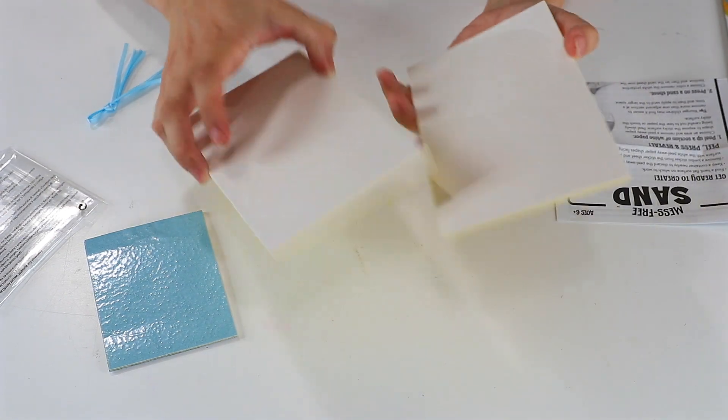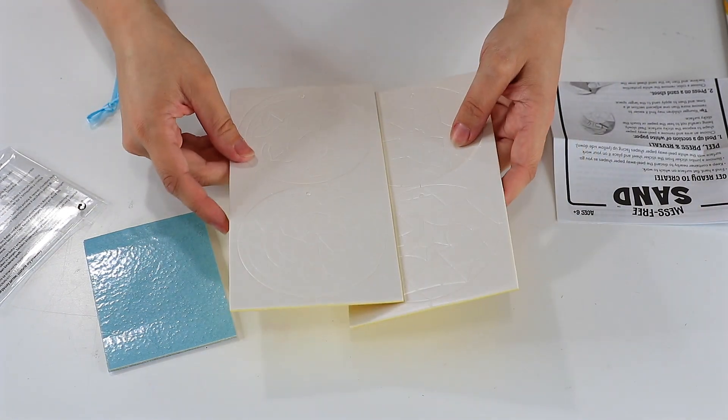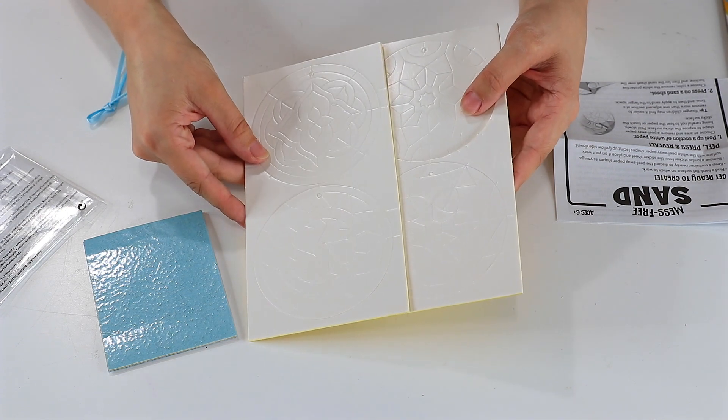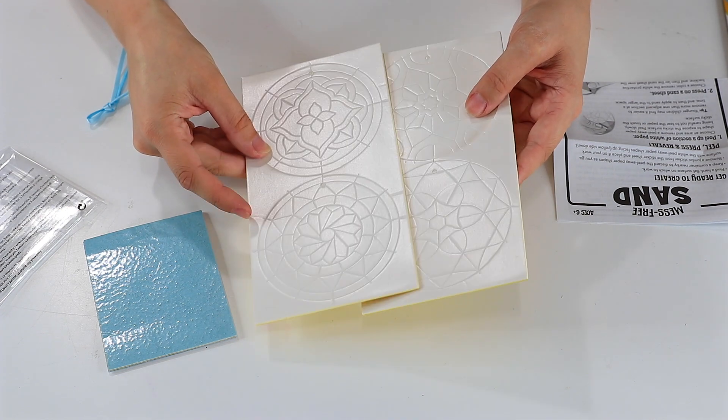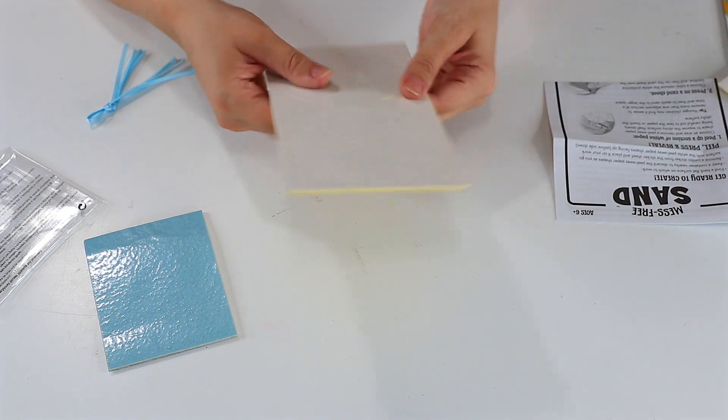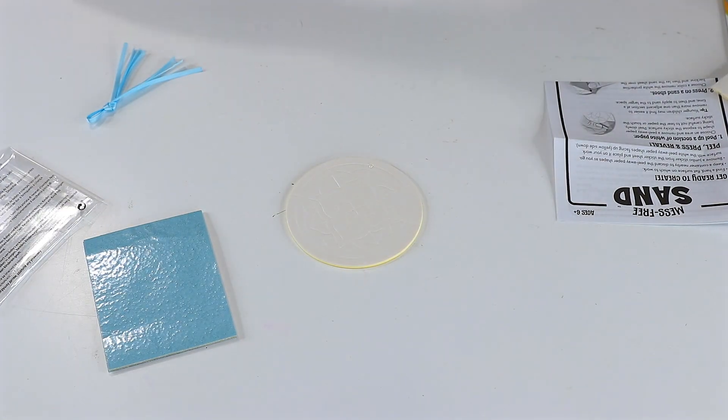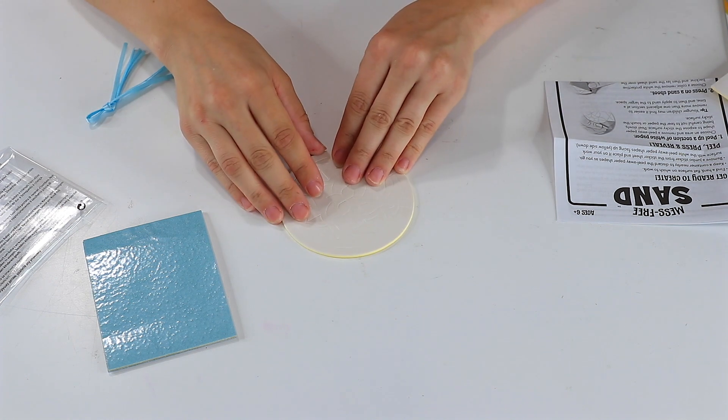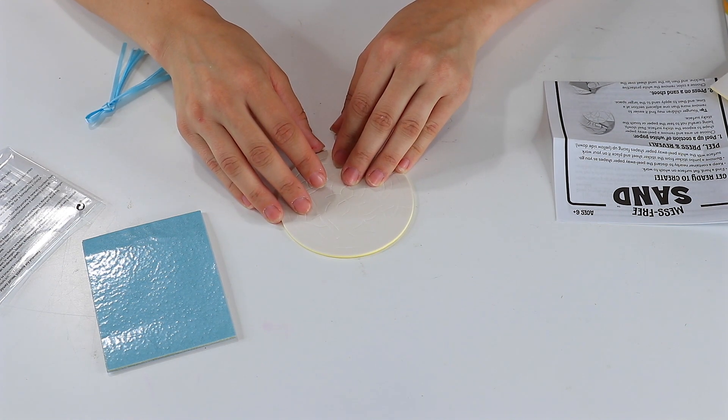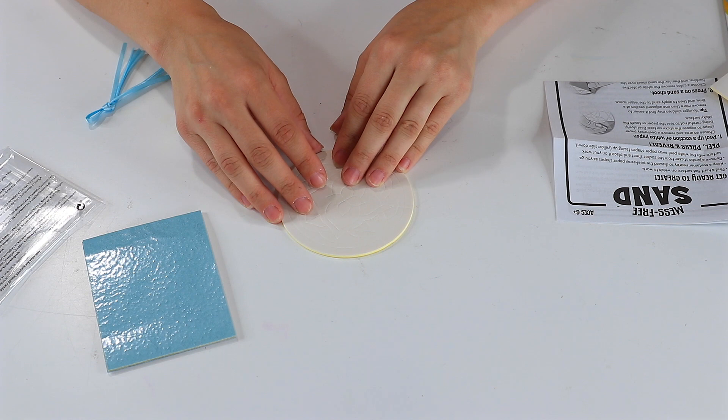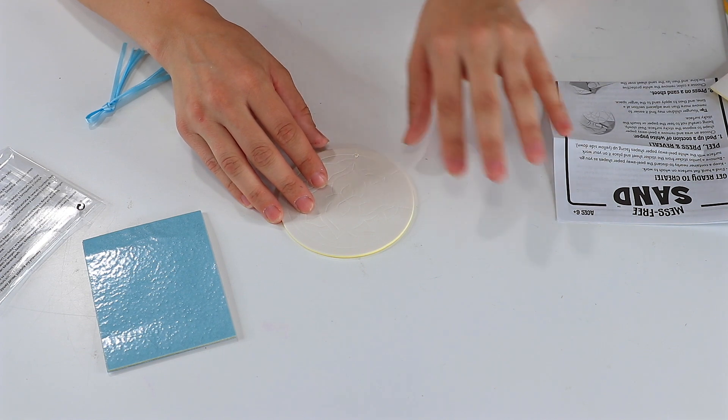So you've got all these different mosaics. I'll try to play with the light here. There you go. You can see the different shapes. I like this one. So you're going to take one of these out. Choose an area and remove a peel-away shape to expose the sticky surface. Please peel away slowly, being careful not to tear the paper or touch the sticky surface.